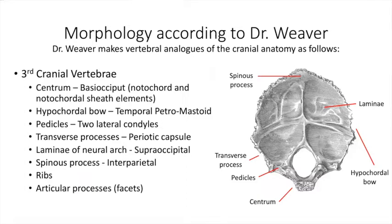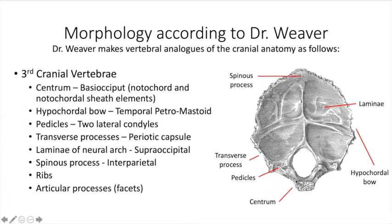According to Dr. Weaver, she makes these vertebral analogs to cranial anatomy. What she's calling the centrum of the occipital bone she calls the third cranial vertebra — the basi-occiput would be the centrum. Here is what she's relating to the pedicles, transverse processes, and spinous processes. If you superimpose a vertebral segment upon this and look at the posterior aspect, here you'd have your transverse processes and here you would have what might be the body or anterior part.